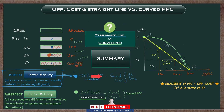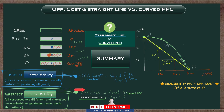On the other hand, the assumption of imperfect factor mobility means you assume resources are all different — some more suitable for apples, some more suitable for cars. With this more realistic assumption, as you produce more and more apples, every time you will have to give up more and more cars. The opportunity cost of apples keeps increasing, so the PPC's gradient keeps increasing, and you end up with a curved PPC — initially flat with a low gradient and low opportunity cost of apples, but becoming much steeper with much higher opportunity cost as you move further right.